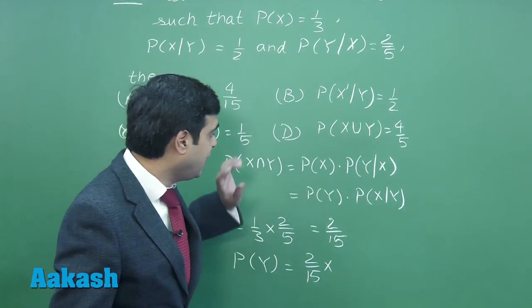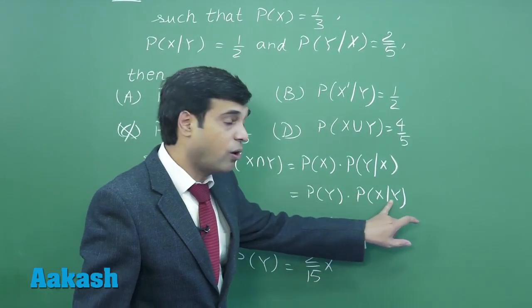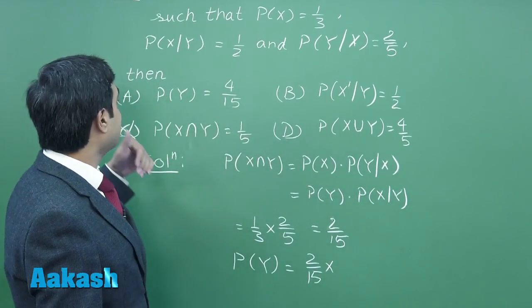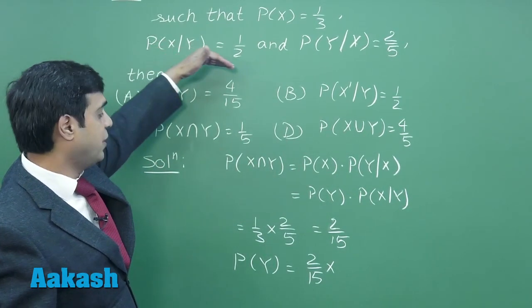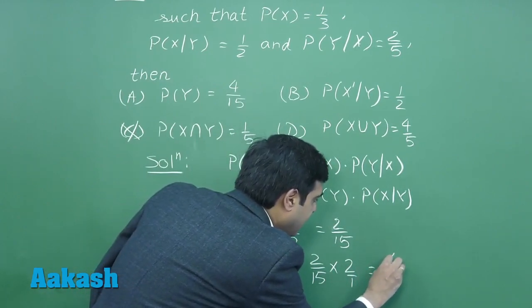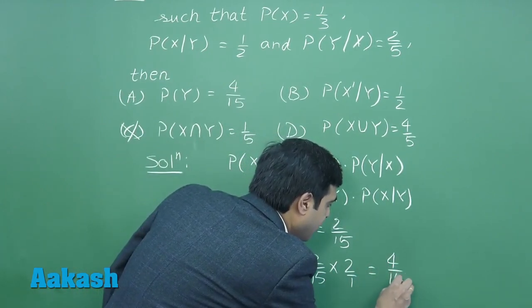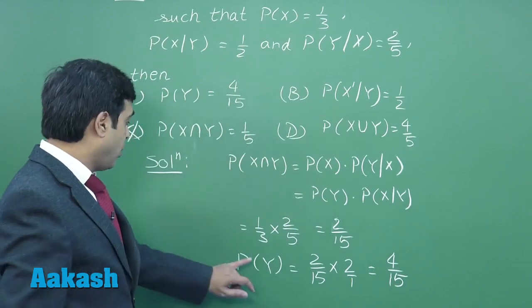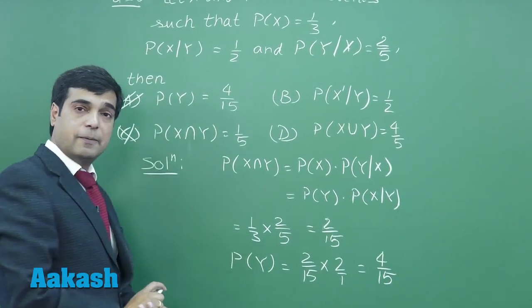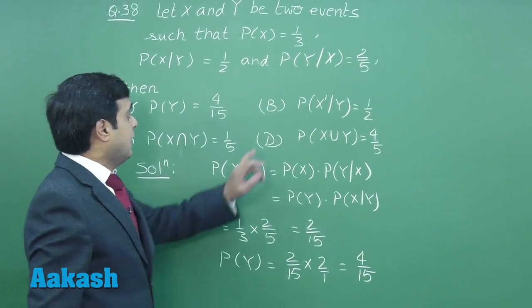Probability of X while Y has already occurred is given to me as half. So this is simply 2/1 here, giving me 4/15. So probability of Y is 4/15. Option A is correct. This point is clear.